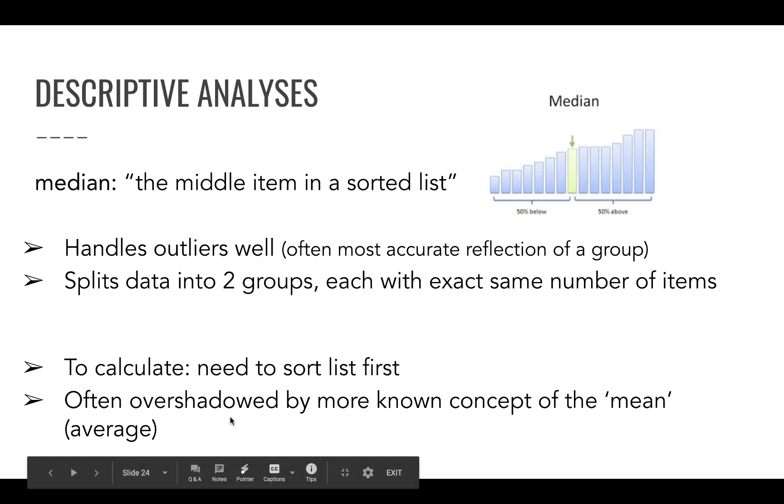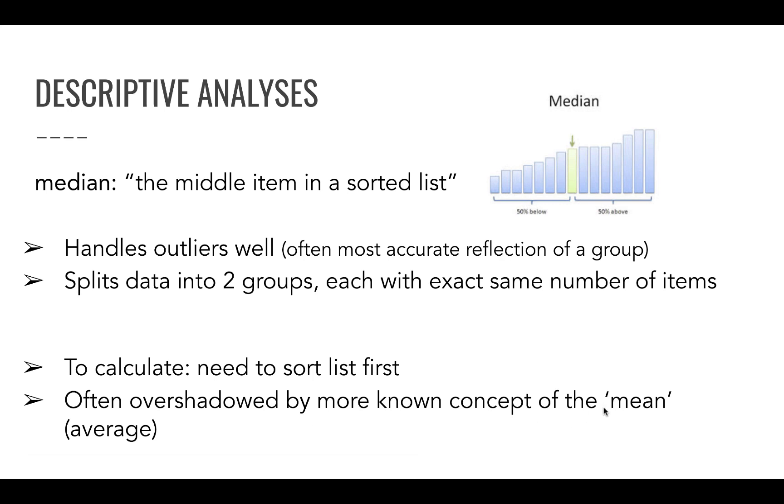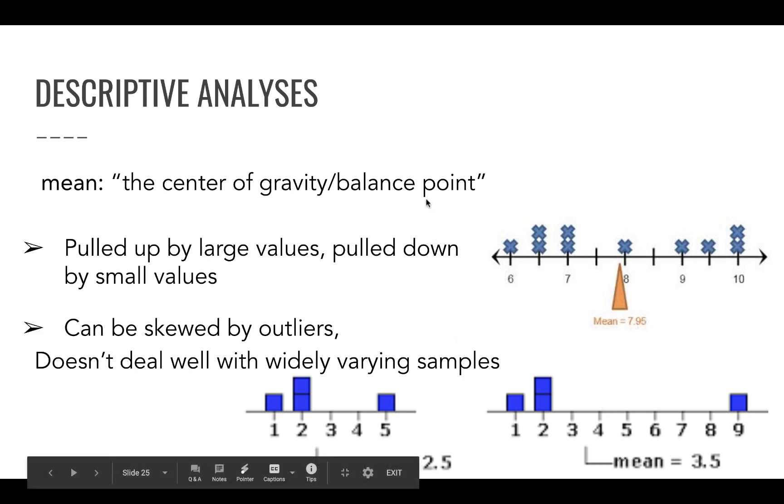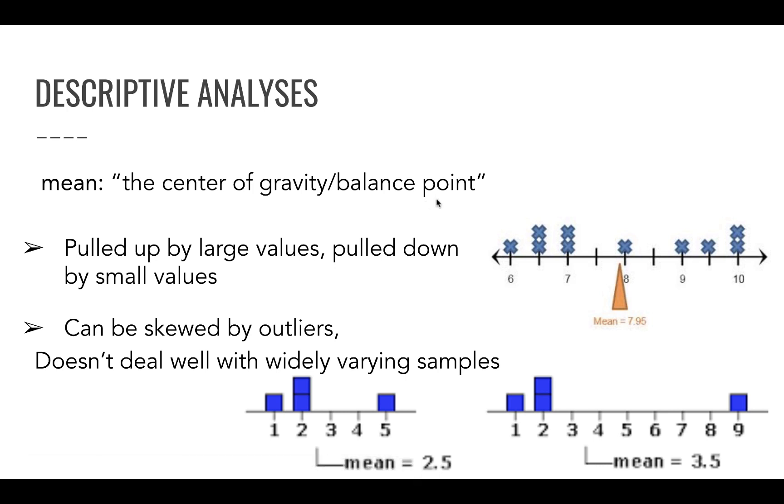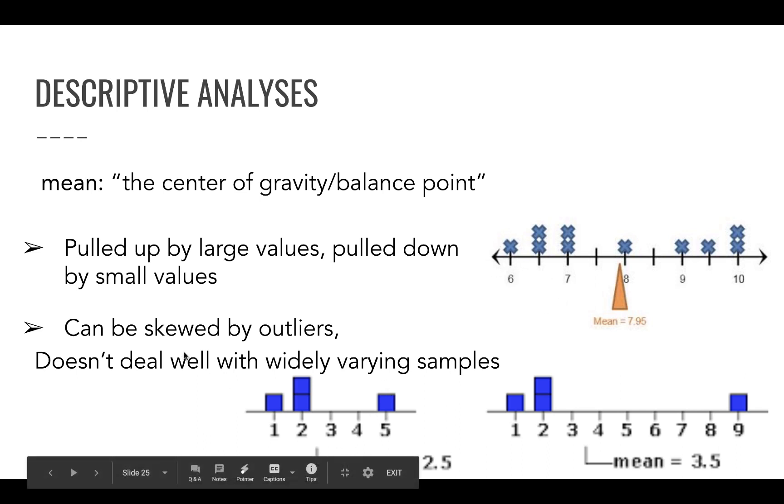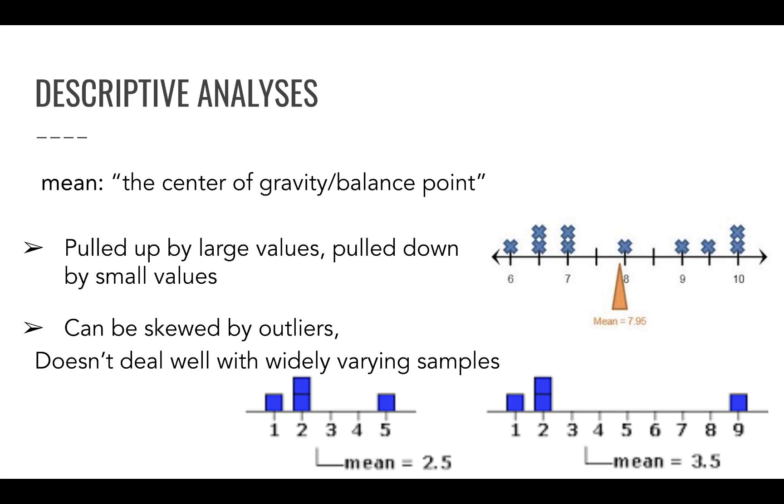The mean, we can actually consider that a center of gravity or a balance point, which is very heavily swayed by extremes. So it's being pulled up by larger values, outliers on the right, and it's also pulled down by lower values, outliers on the left. So it's very sensitive. When you have skewed data with a tail to the left or a tail to the right, your mean will be heavily affected by that. It will really be pulled towards these extremes. In this sense, a mean is not as stable as a median.